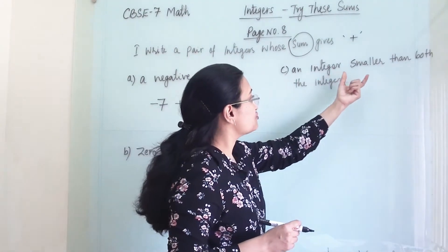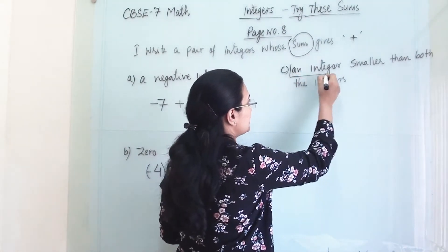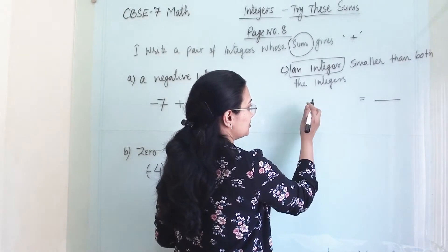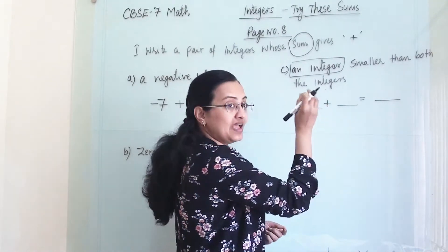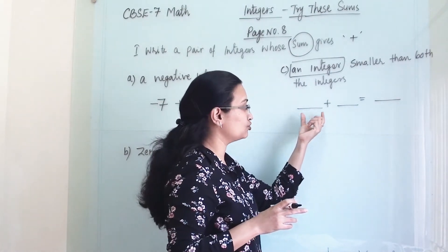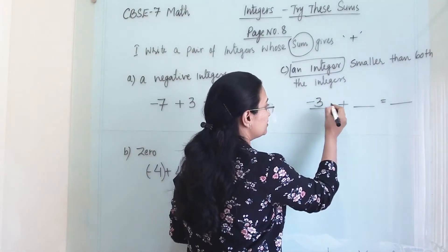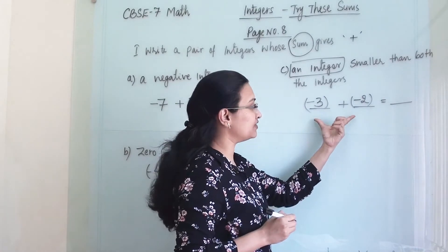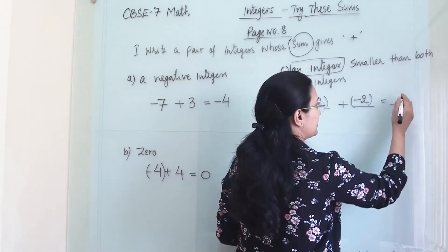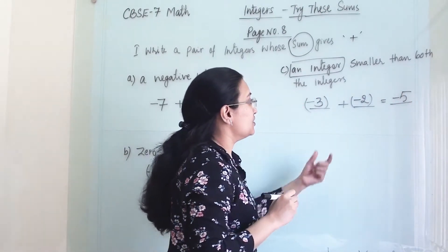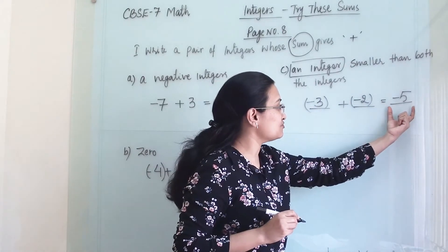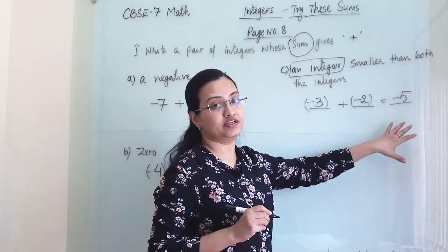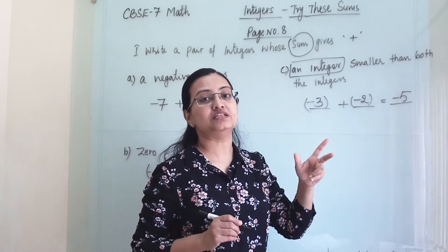Next, we need a pair of integers whose sum gives an integer smaller than both the integers. Whatever answer we get should be smaller than both integers we chose. This is possible only when we take both integers with a negative sign. When both integers are negative, we add them and get a number with a minus sign — for example, minus 5 — which is smaller than both original integers.